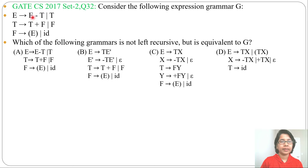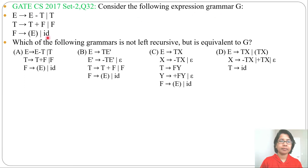Let's discuss one previous question of parsing. This question was asked in GATE CS 2017, set 2, question number 32. Consider the following expression grammar G. One expression grammar is given. Which of the following grammar is not left recursive but equivalent to G?